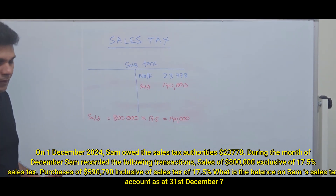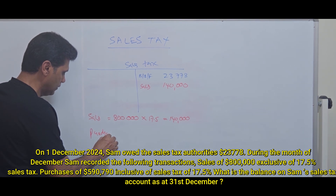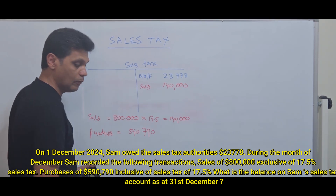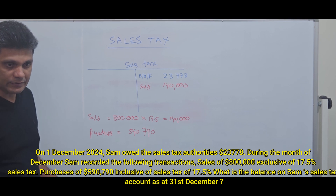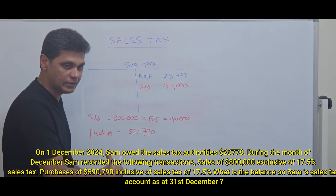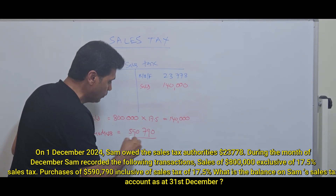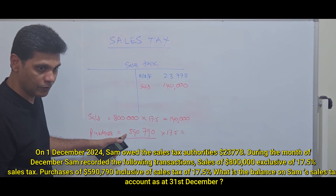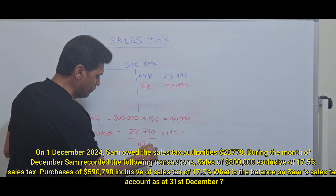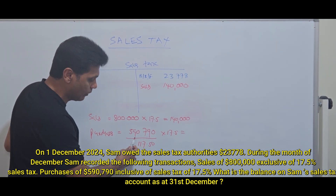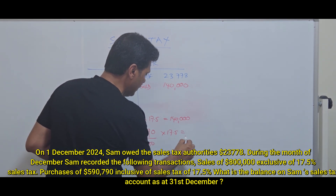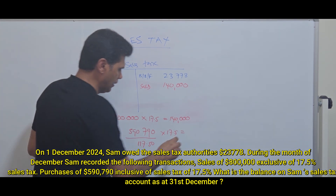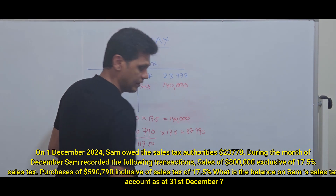Now for purchases, the amount is $590,790 inclusive of tax. Which means you can't calculate 70.5% straight away on this. You need to divide this by 170.5 because it's inclusive of tax, to identify the tax paid on your purchases. The tax on purchases comes to $87,990.